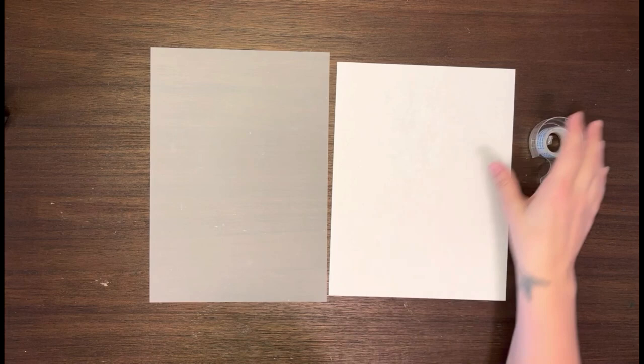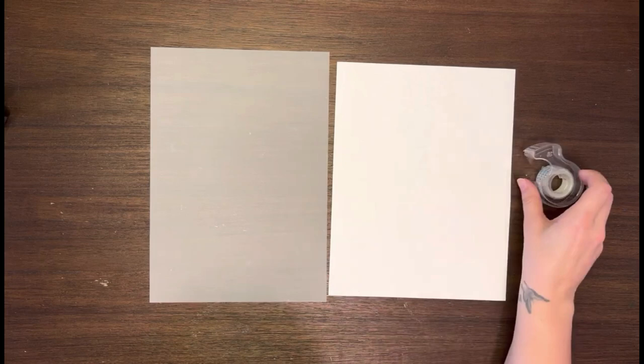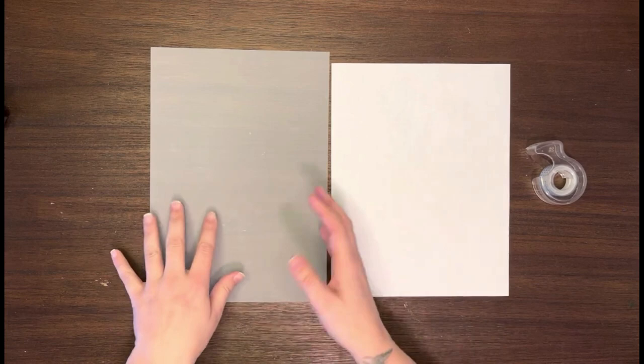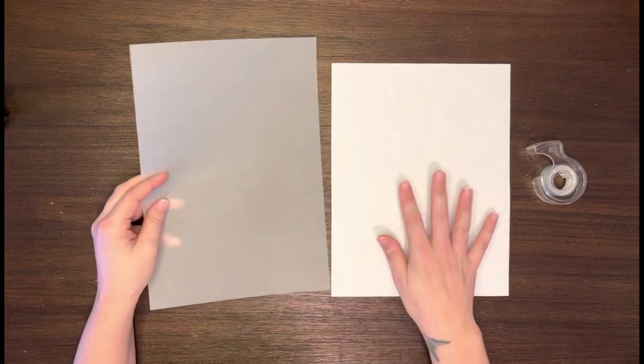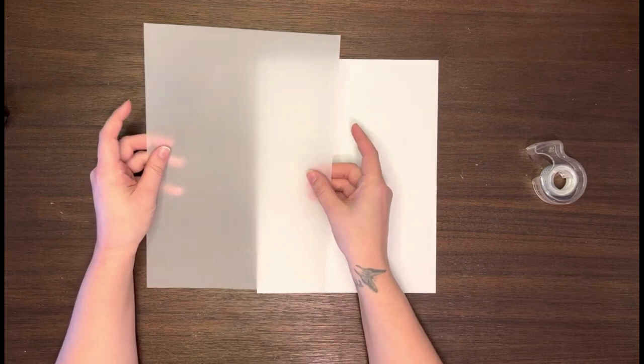All right, so our second trick here is using just a plain piece of paper and a little bit of tape. It doesn't have to be anything special, this I believe is just from the dollar store. But what we're going to do is tape our film to our paper and that way again the printer just has something to recognize.